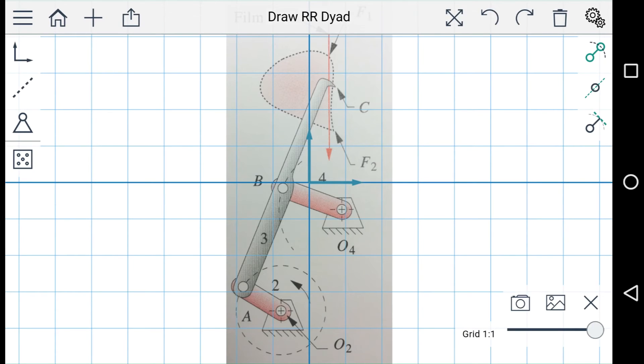So this is a mechanism from a textbook, and it's a film advance mechanism from a film camera. You can use this slider to adjust the opacity of the image to make it easier to see either the image or the linkage.